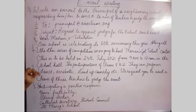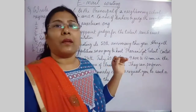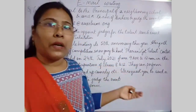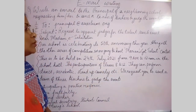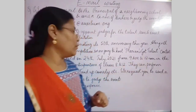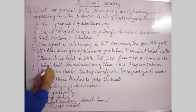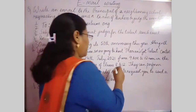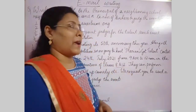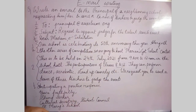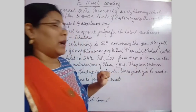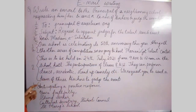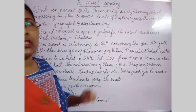In the main content, you write the date, time, venue, and the classes which are going to participate. The event is to be held on 24th July 2021 from 9 a.m. to 12 p.m. in the school hall. Participants are of classes 8 to 12, and they can perform dance, acrobatics, stand-up comedy, etc. You are requesting the principal to send a team of three teachers to judge the event.